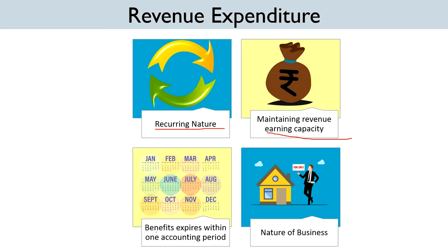Third, any expenditure whose benefit expires within an accounting period is called Revenue Expenditure. This means that either the full benefits are received or the benefits are fully consumed during an accounting period. The last criterion is Nature of Business.